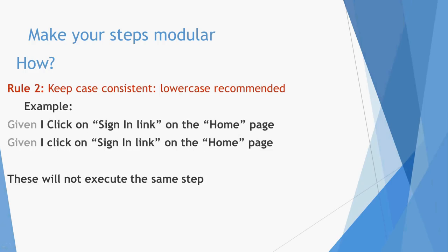Rule two: keep your case consistent. I recommend using lowercase wherever you can. For example, 'When I click on...' with lowercase 'click' versus uppercase 'Click' will not match the same regular expression — they look the same but they're different. If you don't follow my recommendation of all lowercase, at minimum make sure the casing is consistent wherever the step is used. Most of the time when automating you'll ignore case and downcase everything anyway.